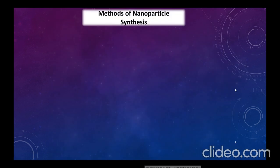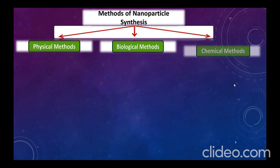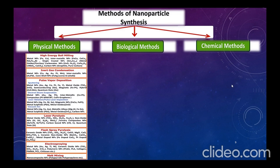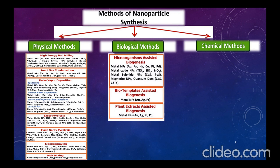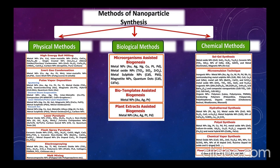Examples of nanoparticle preparation by different synthesis methods: physical methods include high energy ball milling, inert gas condensation, pulse vapor deposition, laser pyrolysis, flash spray pyrolysis, electrospraying, and melt mixing. Biological methods include microorganism-assisted biogenesis, bio-template-assisted biogenesis, and plant extract-assisted biogenesis. Chemical methods include sol-gel synthesis, microemulsion technique, hydrothermal synthesis, polyol synthesis, chemical vapor synthesis, and plasma-enhanced chemical vapor deposition. Metal nanoparticles are the most commonly synthesized type.